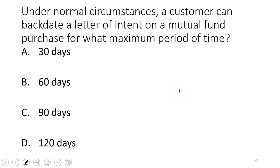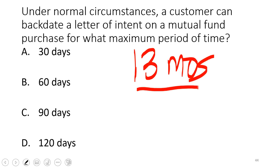A customer can backdate a letter of intent by 90 days. A letter of intent tells the mutual fund you intend to reach a breakpoint (quantity discount), so the fund lets you come in at the lower sales charge now. The LOI period is 13 months. Customers cannot be hurt by filling out an LOI: if they don't meet the breakpoint, the fund sells shares held in escrow and retroactively adjusts the account. The backdate window is 90 days — testable.